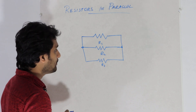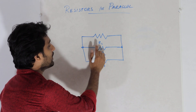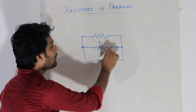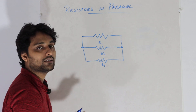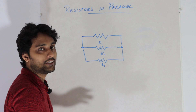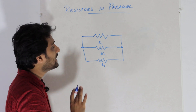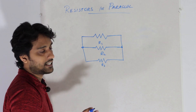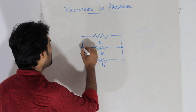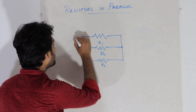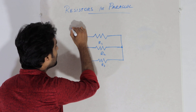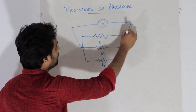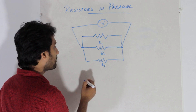So, what is the potential? These two points are equal, so the potential difference is the same. If you connect the voltage, that is V, it is the same across all resistors.